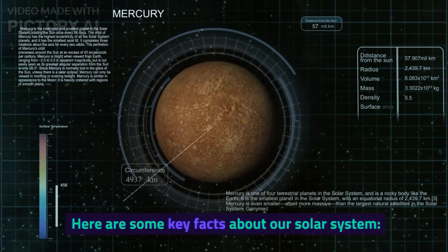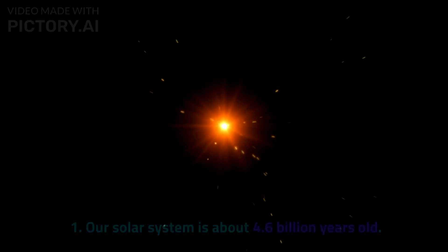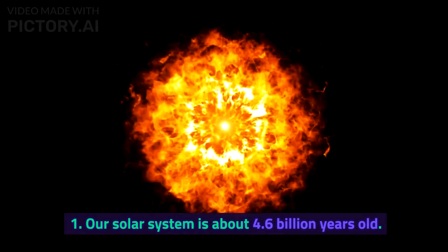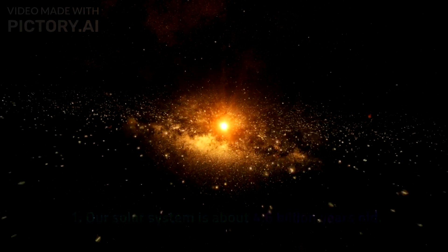Here are some key facts about our solar system. One: Our solar system is about 4.6 billion years old.